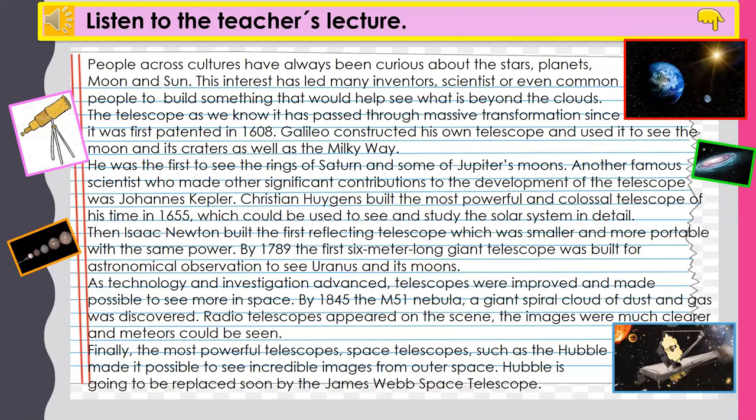By 1845, the M51 nebula, a giant spiral cloud of dust and gas, was discovered. Radio telescopes appeared on the scene — the images were much clearer and meteors could be seen. Finally, the most powerful telescopes, space telescopes such as the Hubble, made it possible to see incredible images from outer space. Hubble is going to be replaced soon by the James Webb Space Telescope.